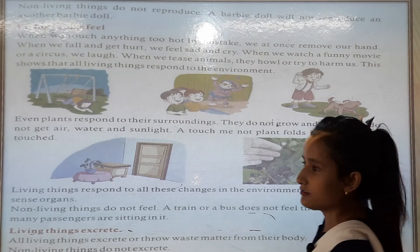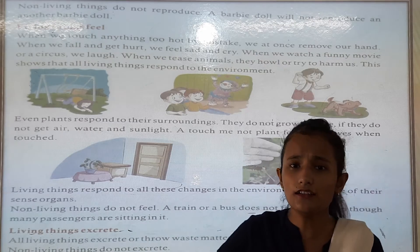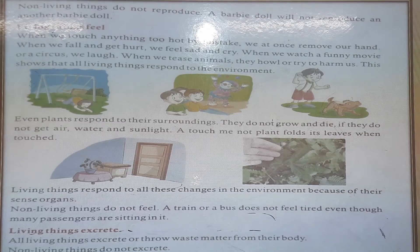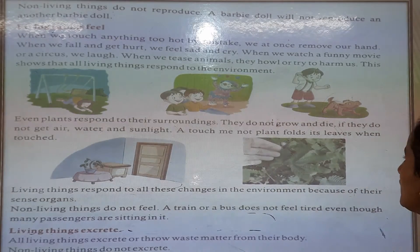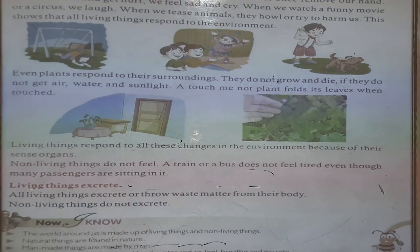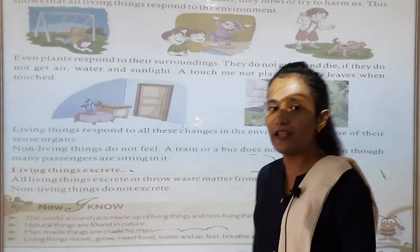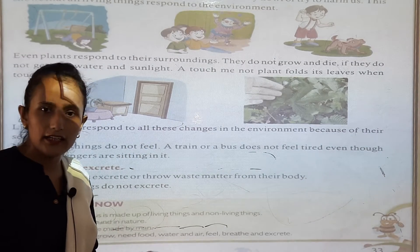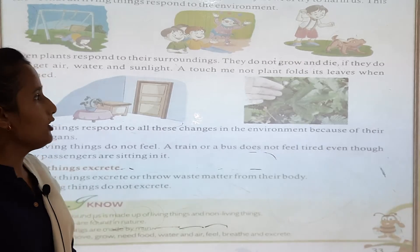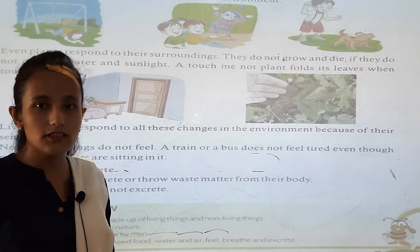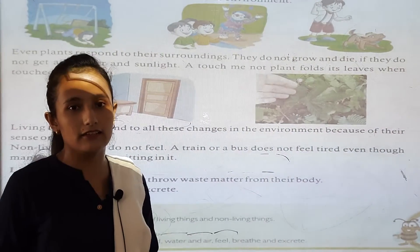This shows that all living things respond to the environment. Even plants respond to their surroundings — they do not grow and will die if they do not get air, water, and sunlight. When plants get water, sunlight, and air, they survive.